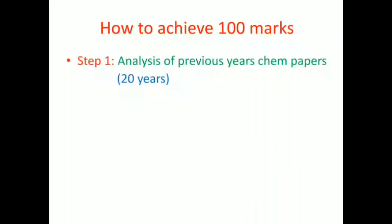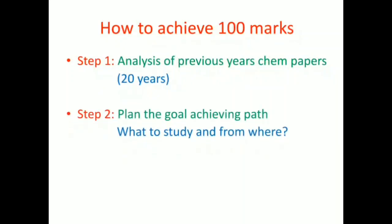Once you have done the analysis, you will know what you need to study and what you don't. That is step two: plan the goal-achieving path. That is, what to study and from where. Once you know what and from where, the thing that remains is how to study. That is step three: follow the path of success. We'll discuss these steps in detail. Let's go ahead and find out.